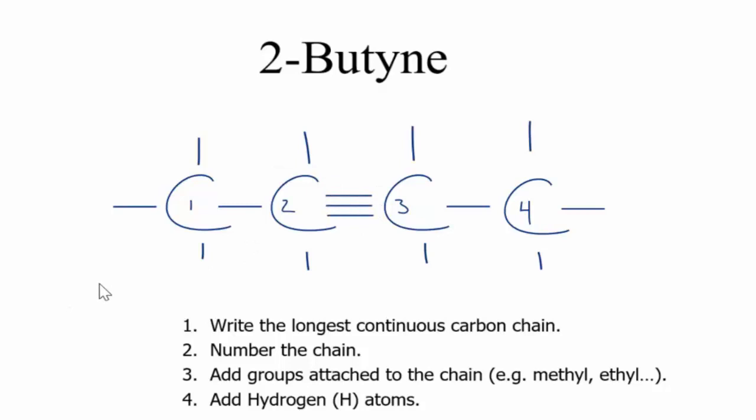But each carbon can only bond to four things. Right now this carbon here has one, two, three, four, five, six. Same for this carbon right here. So we need to get rid of some of these hydrogens here.